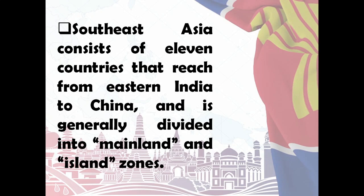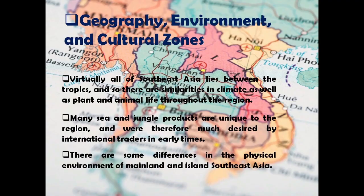Muslims can be found in all mainland countries, but the most significant populations are in southern Thailand and western Burma. The Cham people of central Vietnam and Cambodia are also Muslim. The geography, environment, and cultural zones in Southeast Asia are quite varied.